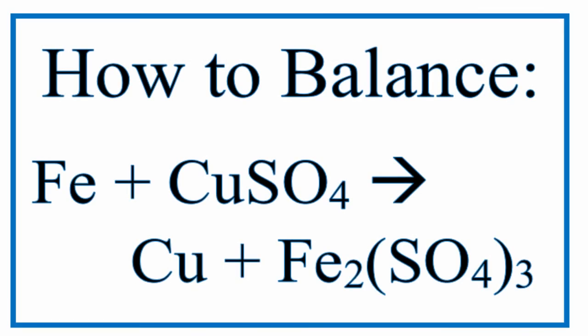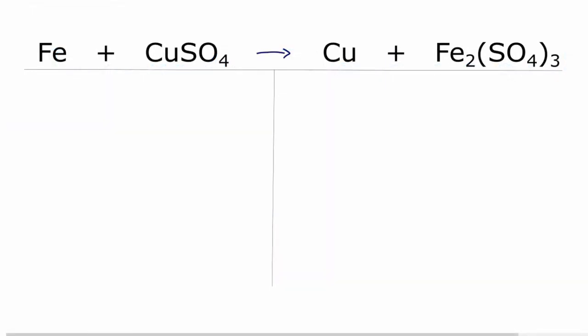This is Dr. B. Let's balance this equation here. We have iron plus copper 2 sulfate yields copper plus iron 3 sulfate.